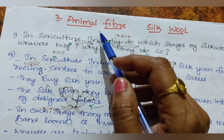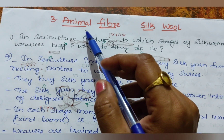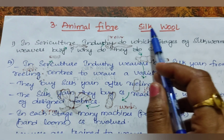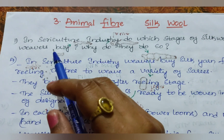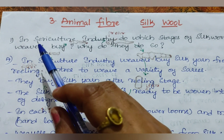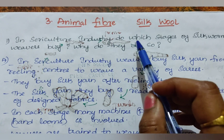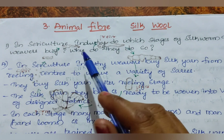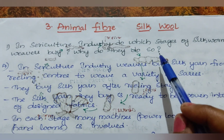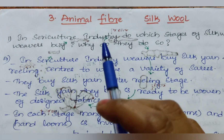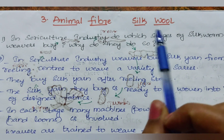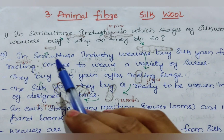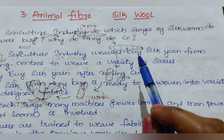We will see the Improve Your Learning question answers of Animal Fiber, that is silk and wool. The first question: In the sericulture industry, which stages of silkworm do weavers buy, and why do they do so? In the sericulture industry, weavers buy silk yarn from reeling centers.